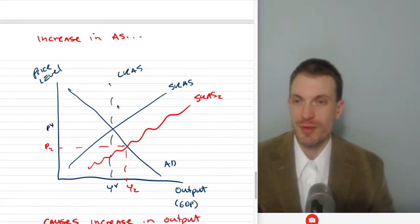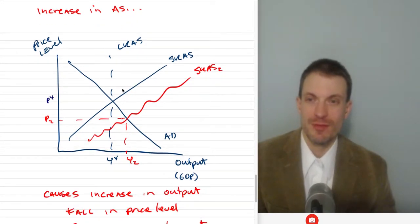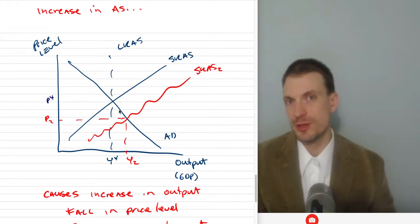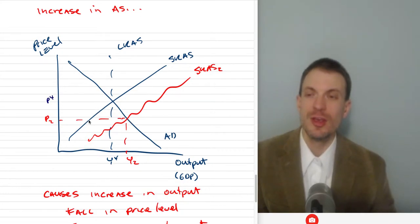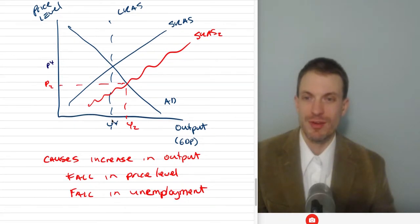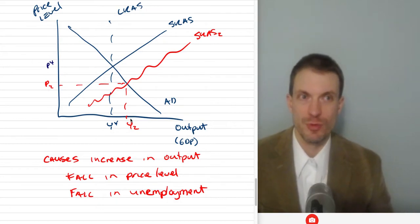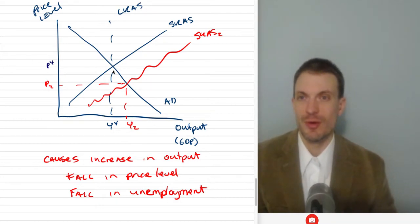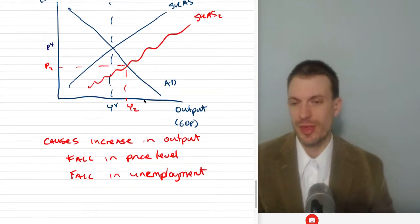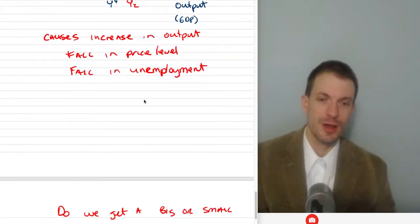Suppose we have an increase in aggregate supply. If something's reducing the cost of doing business, like repealed regulations or whatever the case, we're going to get a fall in the price level, an increase in output, and a fall in unemployment. We're going to have an increase in output, which means greater demand for workers, which means unemployment falls. That would happen with an increase in aggregate supply in the short run. Of the four pictures, this one's a little bit less typical.